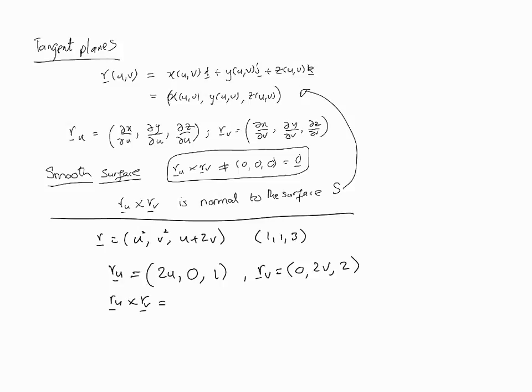Now if we calculate r_u × r_v using the standard method, we'll end up with (-2v, -4u, 4uv). At the point (1,1,3), we need to convert it into the u,v parameters. This means u² = 1 and v² = 1, and u + 2v should be 3. The value that enables this is u = 1 and v = 1.